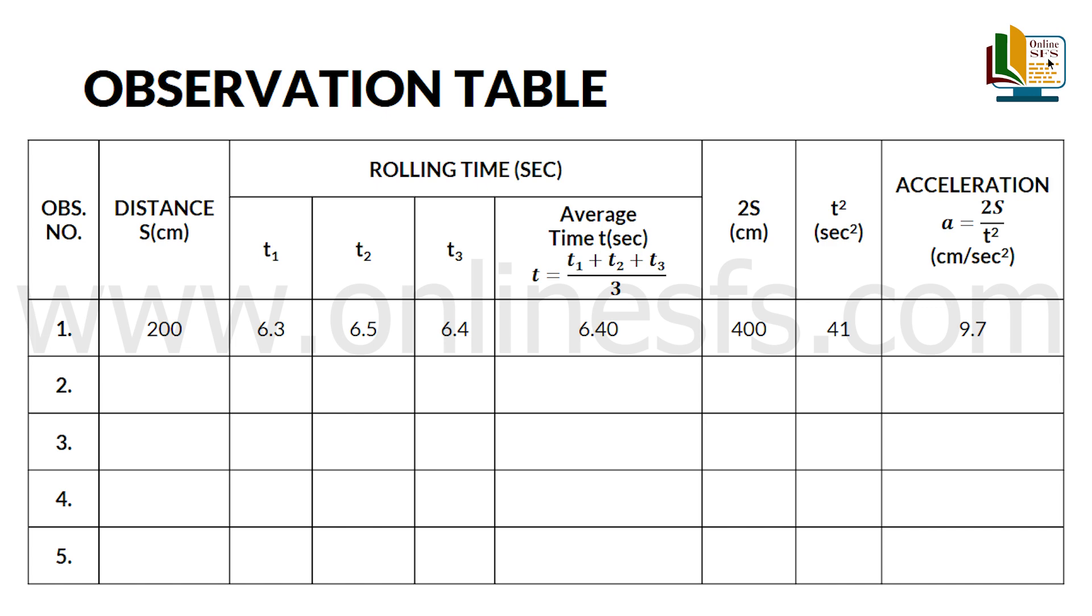We will square average time t to get t square, that is 6.4 multiplied by 6.4 equals to 41. Substitute the values of 2s and t square to get the acceleration a. The acceleration is found to be 9.7 cm per second square.